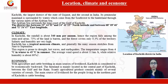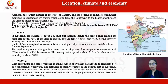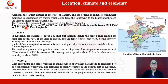Let us talk about location first. Kutch is the largest district in the state of Gujarat and the second largest district in the country. It is a peninsular mainland surrounded by water, which comes from the southwest to the hinterland through various inlets of the Arabian Sea. On the map you can see the region of Kutch highlighted, and also the geographical location given in longitudes and latitudes.